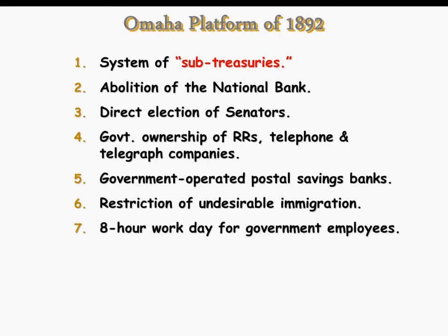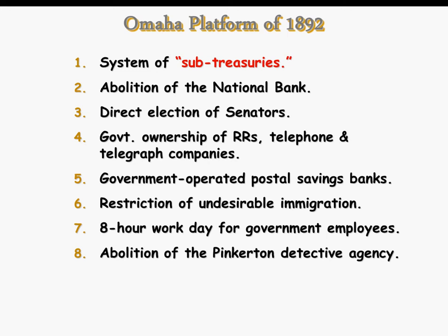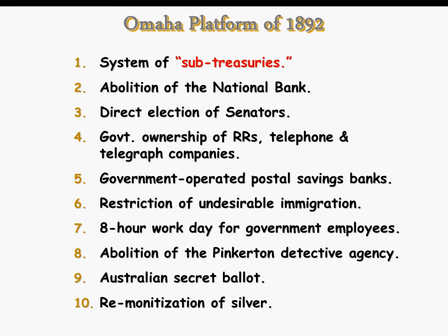They wanted some restrictions on immigration. They wanted an eight-hour workday for government employees, thinking this might bring more people into the party. They were never big fans of the Pinkerton Detective Agency, because they always seemed to be on the side of big business. They wanted the Australian secret ballot — that you voted and people didn't know how you voted. And they certainly wanted silver to be part of the money system.